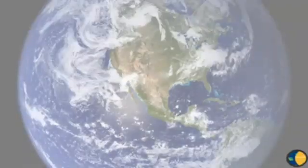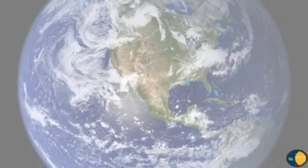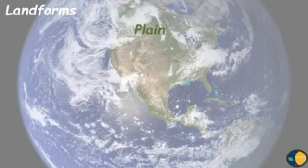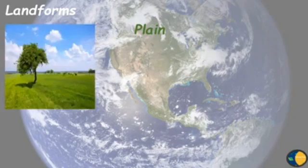You will start with landforms. There are many types of land on the Earth. Number one is plain. A plain is a level and flat land. It is easy to grow crops on plains.